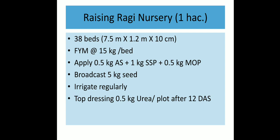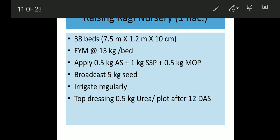For raising a ragi nursery, the seed bed dimension required is 7.5m long, 1.2m width and 10cm above the ground. Firstly, we have to apply farm yard manure at the rate of 15 kg per bed. After that, apply 0.5 kg ammonium sulphate plus 1 kg single super phosphate or 0.5 kg muriate of potash. Then seeds are broadcasted on the wet bed and irrigated regularly. After 12 days, top dressing of 0.5 kg urea per plot is done.